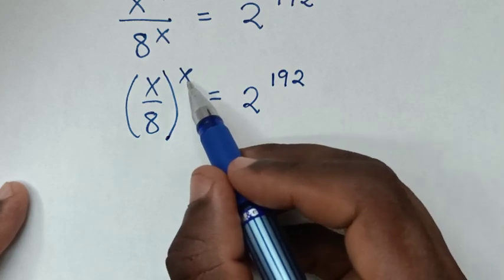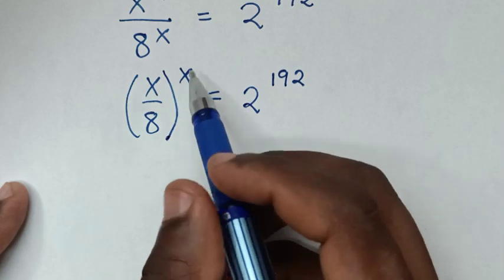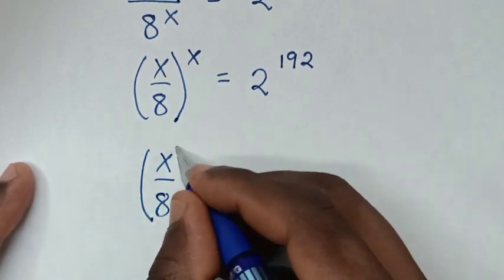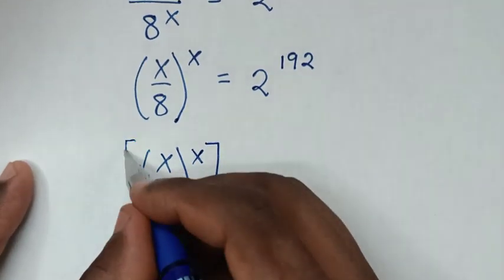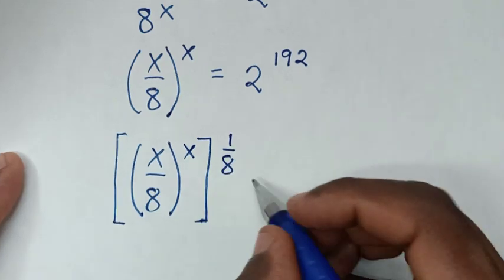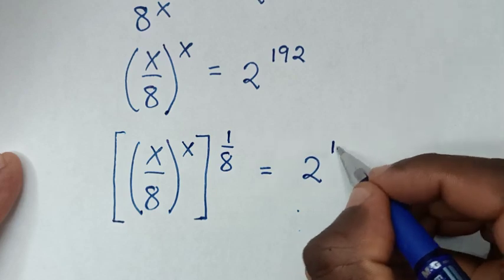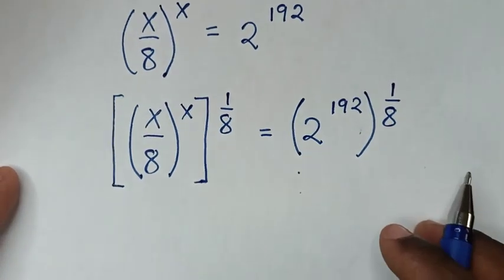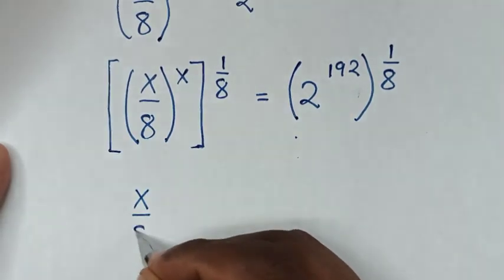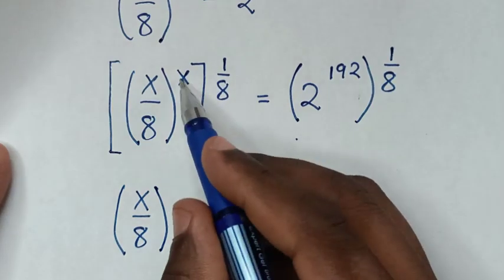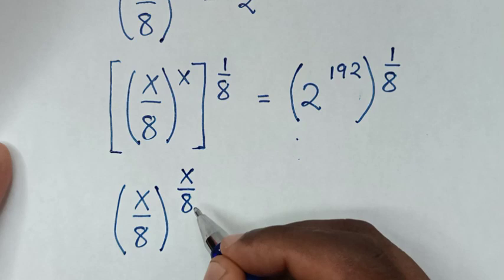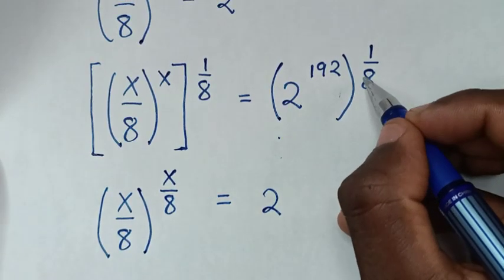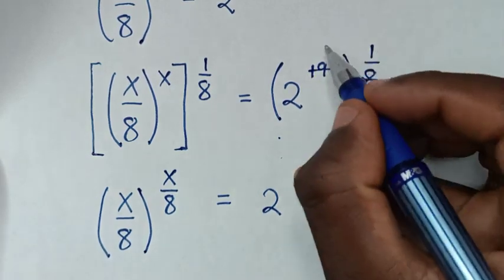So we have x, and we will divide by 8, therefore we will multiply by the power of 1 over 8 on both sides. It will be x over 8, bracket power of x, then bracket power of x times x over 8, then bracket power of x times x. In this first step it will be x over 8, bracket power of x times 1 is x, over 8, is equal to 2 power of 8 — 8 divided by 192.